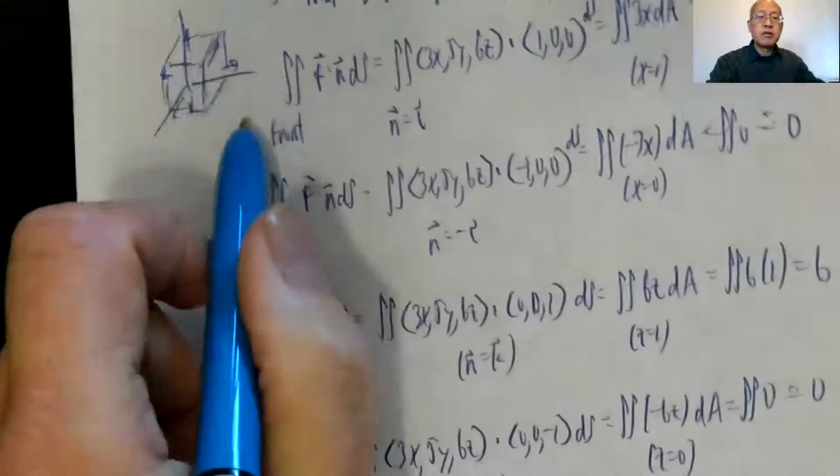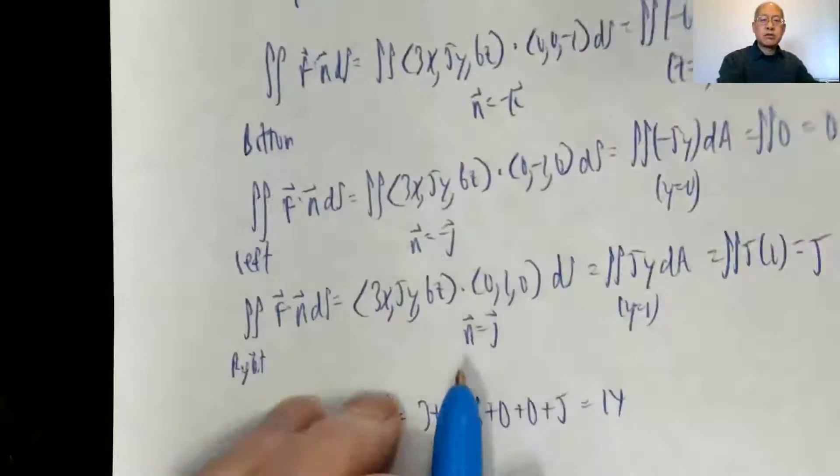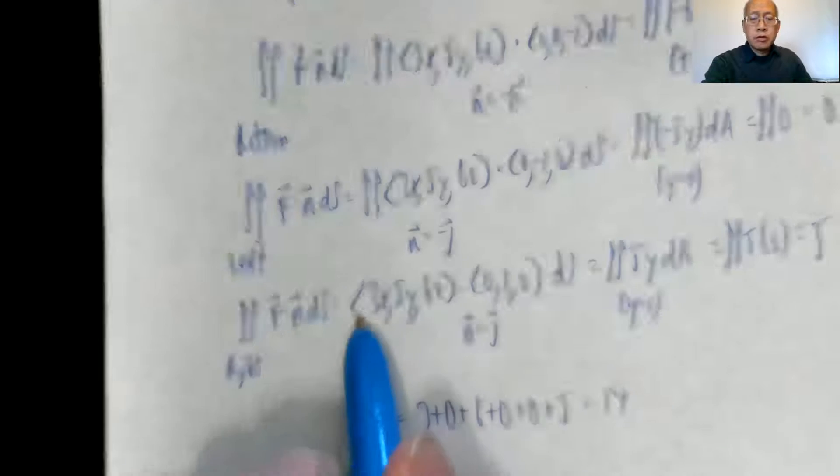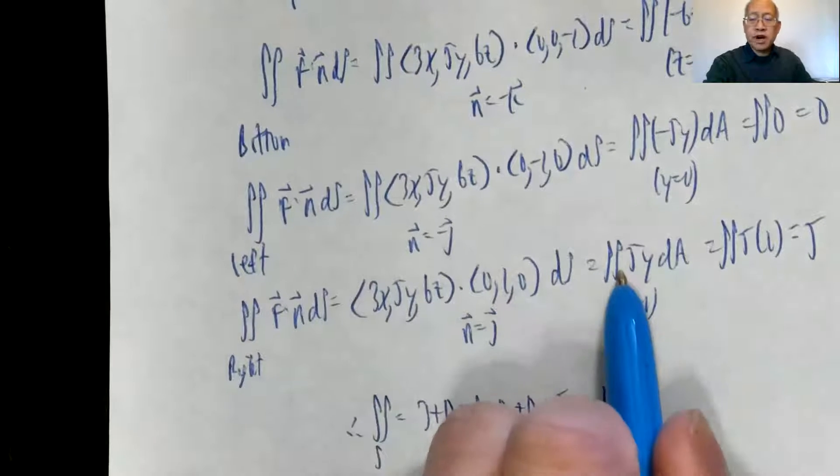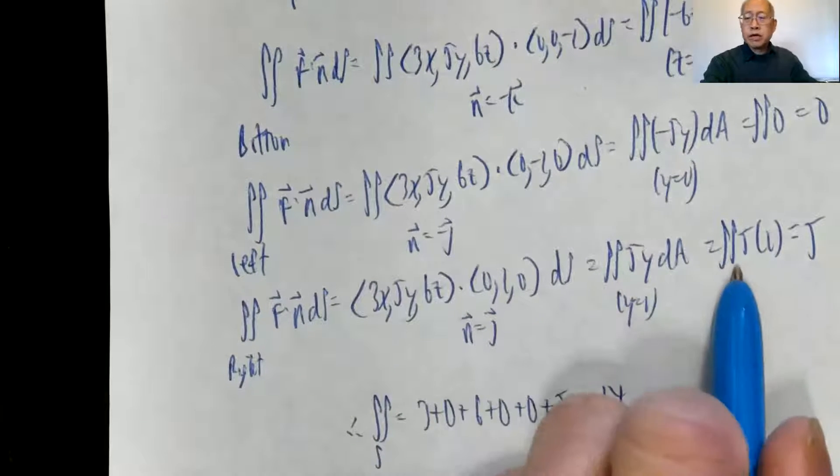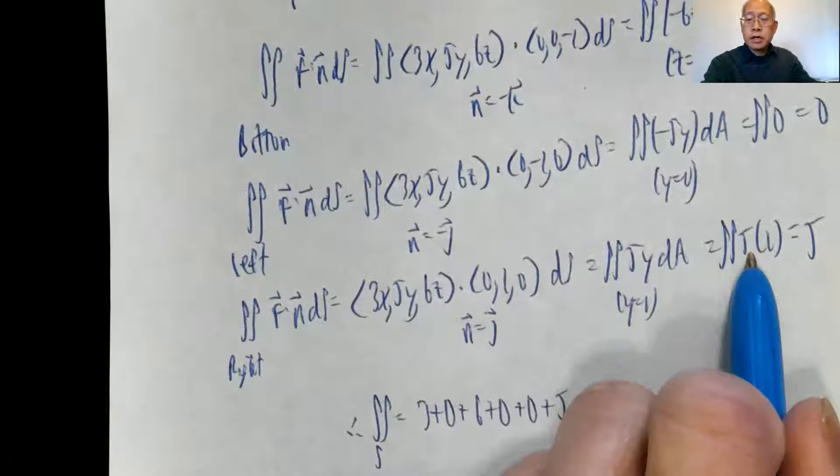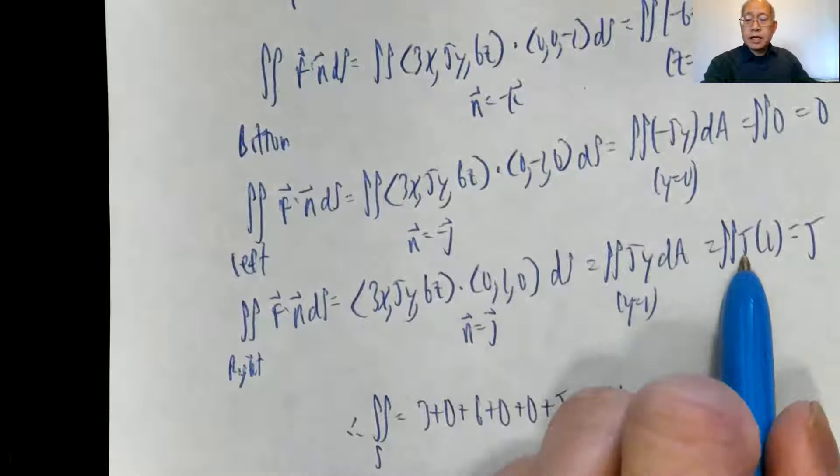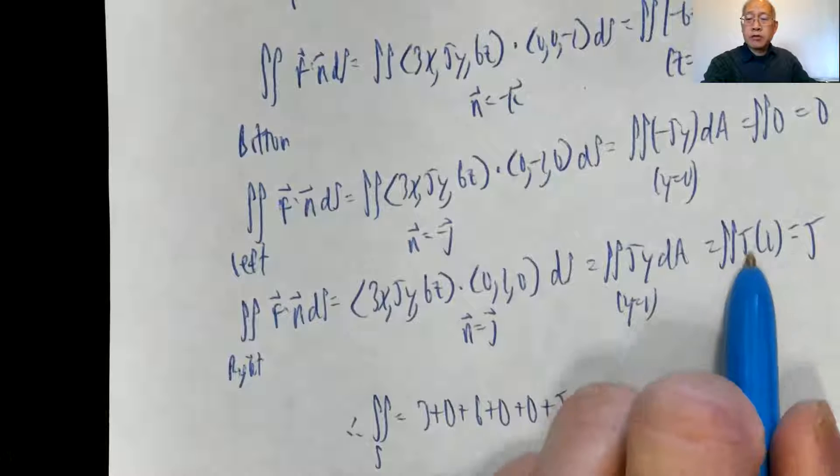And finally for the right side: the unit normal vector is j at (0, 1, 0). So F dot (0, 1, 0) is 5y, but y is 1. Plug in 1, 5 times 1, the dA is 1 by 1, so 5.